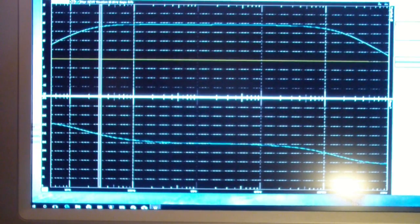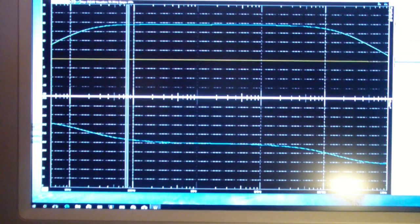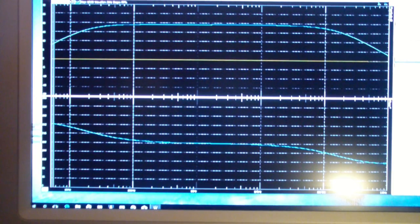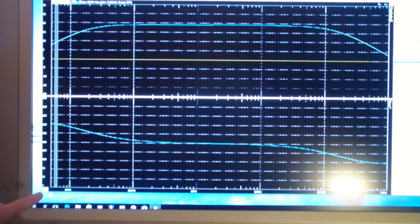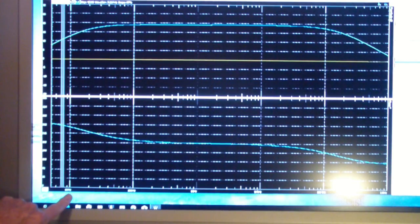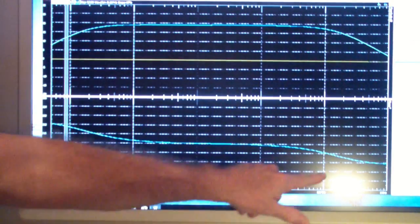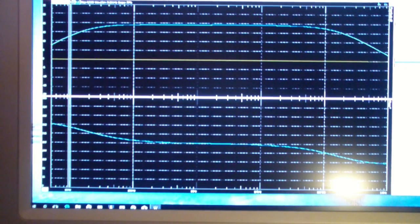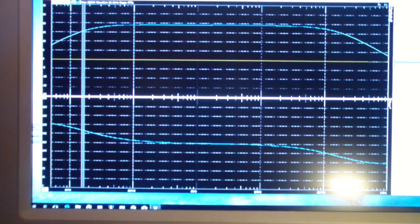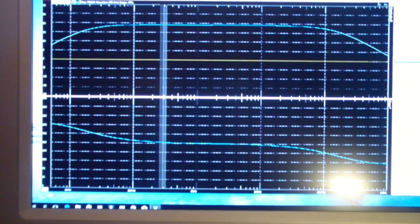Continuing with simple transistor amplifiers, on the screen you see the network analyzer of the analog discovery. It is sweeping the design that we did in part one from 10 hertz out to 100 kilohertz. What is displaying at the top is the gain of the stage, and at the bottom is the phase.